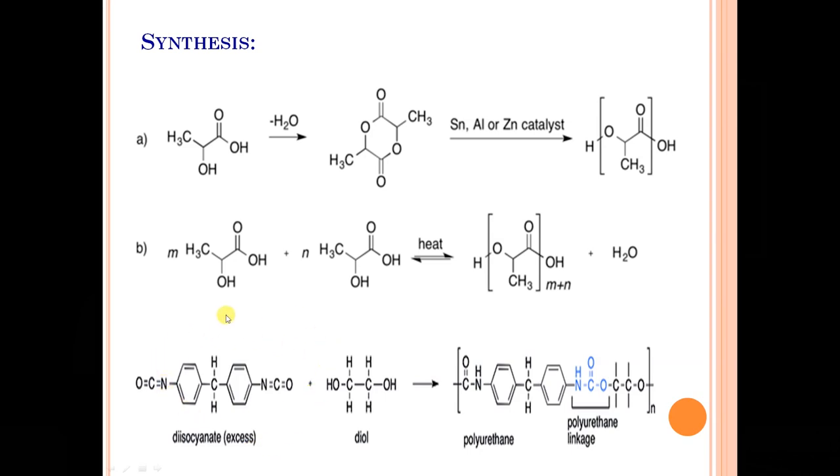Same way, another example is starting from diisocyanate. Already in case of polyurethanes we have studied, diisocyanate is treated with a diol. Both undergo condensation reaction forming a polyurethane. This is a polyurethane polymer and this is the functional group of urethane. There are many molecules of urethane, therefore it is called a polyurethane.